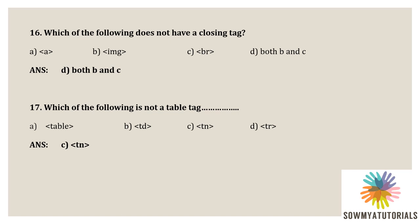Which of the following is not a table tag? Options are: table, TD, TN, and TR. Among these, TN is not a table tag. Table is the table tag, TD is the table data/header, TR is the table row, but TN is not a table tag. So the correct option is TN.